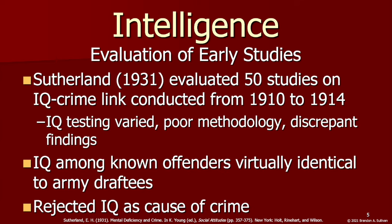Low intelligence is assessed using what is known as an intelligence quotient, or IQ test. Many intelligence studies were conducted on populations of known offenders in the early 1900s, identifying a link between IQ and crime. However, criminologist Edwin Sutherland evaluated these early studies on the IQ-crime link in 1931 by comparing the IQ scores among the offenders tested with those of Army draftees, who were considered representative of the general population, and found them to be virtually identical. He also identified inconsistent application of IQ tests and poor methodologies in the studies. Therefore, he dismissed the idea of an IQ-crime link, which became widely accepted in criminology for decades.